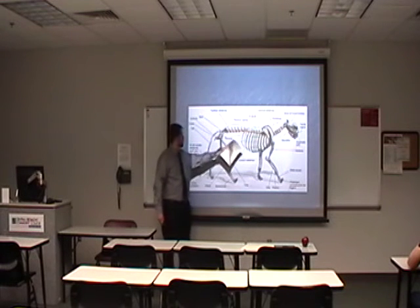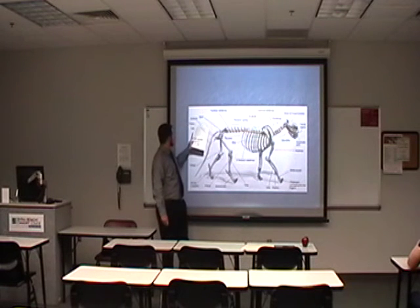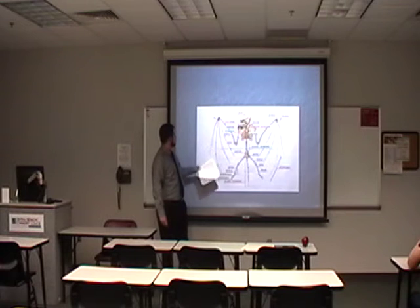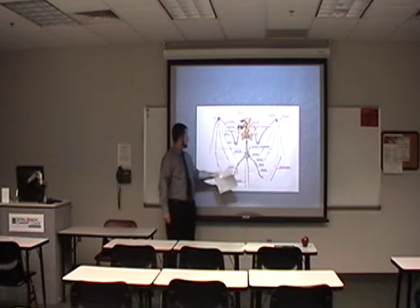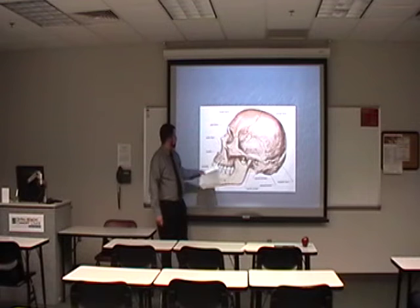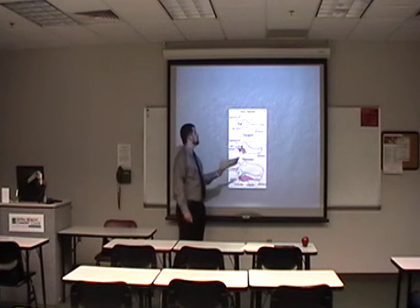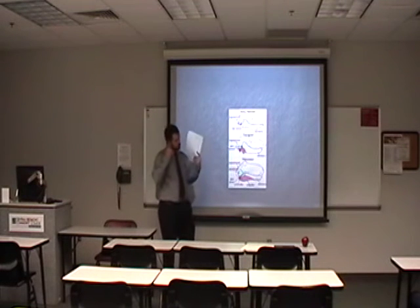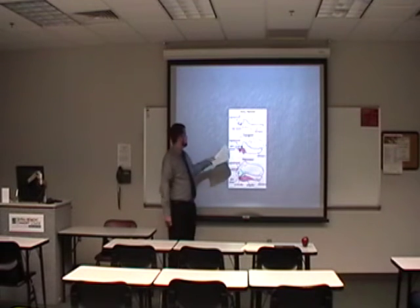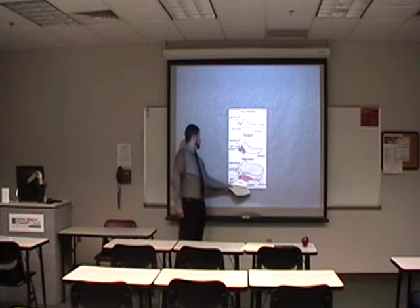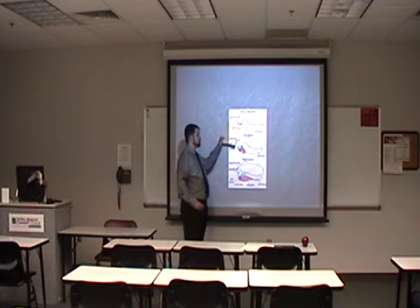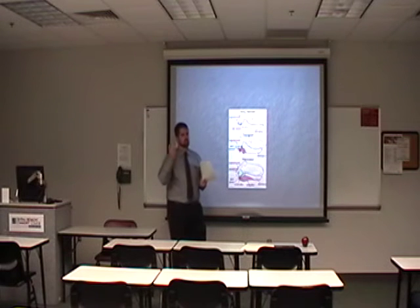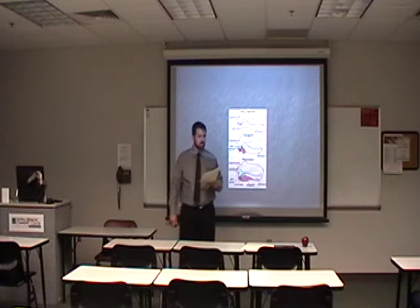The number of vertebrae may change between different species, but the basics are all still there — your scapula, your lumbar vertebrae. Even with the pelvis and the sacrum, it's the same. And the same is true with the skull, with the exception of the jaw of a reptile, which actually has some extra bones that through research and fossils we see moved up and became the bones of the inner ear that allow you to hear.